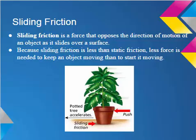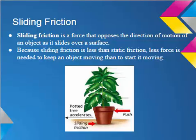The next type of friction we'll discuss is sliding friction. This is a force that opposes the direction of motion of an object as it slides over a surface. Since sliding friction is less than static friction, less force is needed to keep an object moving than to start it moving. In this case, you push on the pot with the help of a friend with enough force to overcome the static friction. The pot slides across the patio, and once it's moving, static friction no longer acts on it. Instead, a smaller friction force called sliding friction acts on the sliding pot.